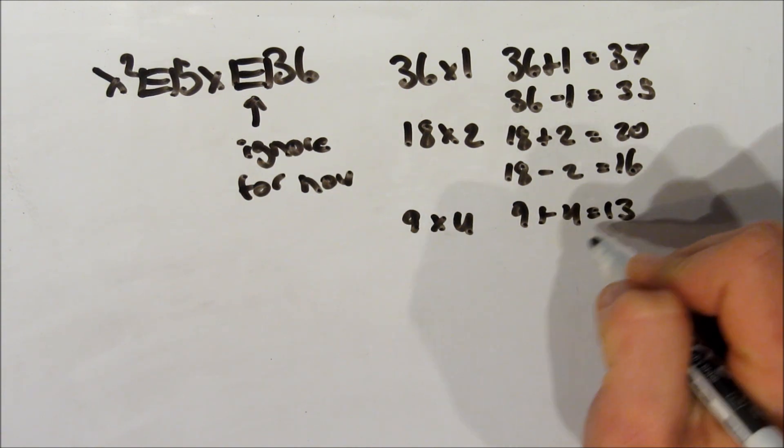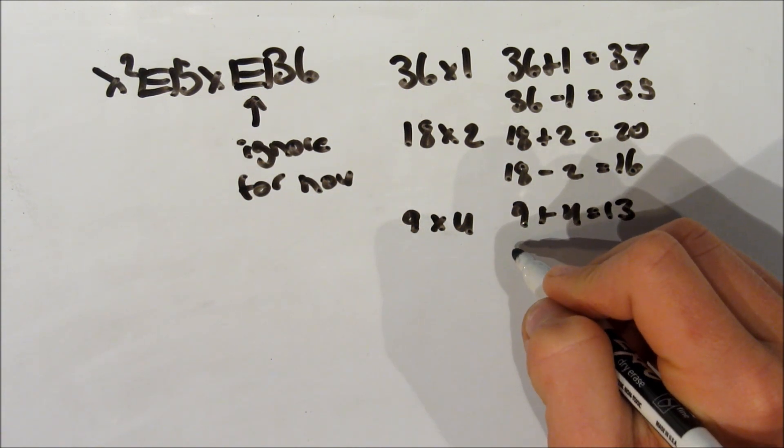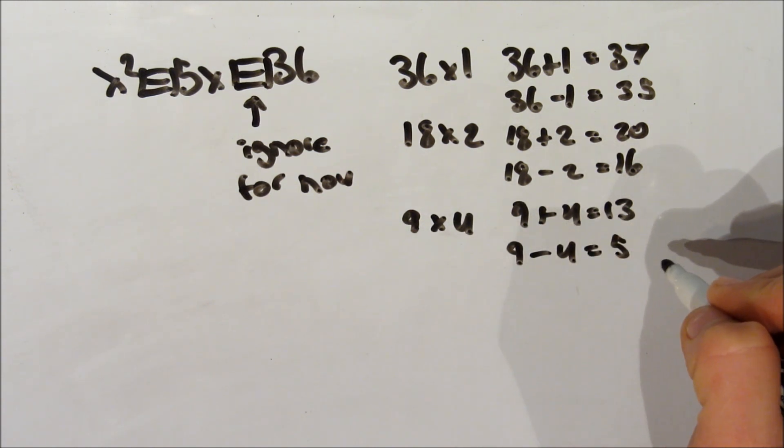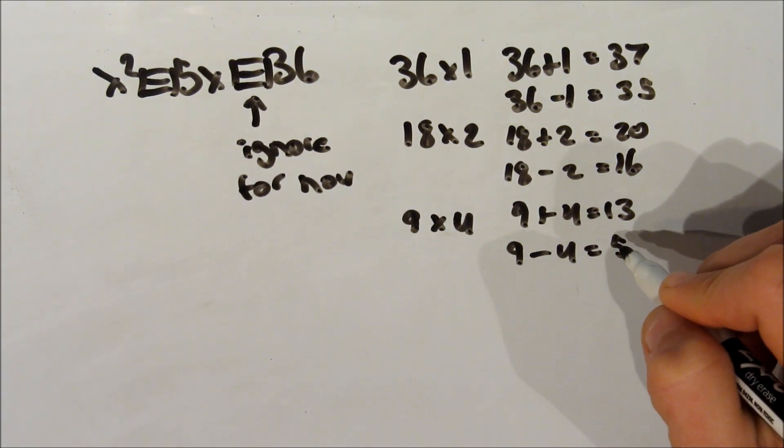Now we look at the next one. So we go 9 times 4. 9 plus 4 is 13. That's not 5. And now we look at 9 minus 4. See, that gives you 5. So those are actually our factors.